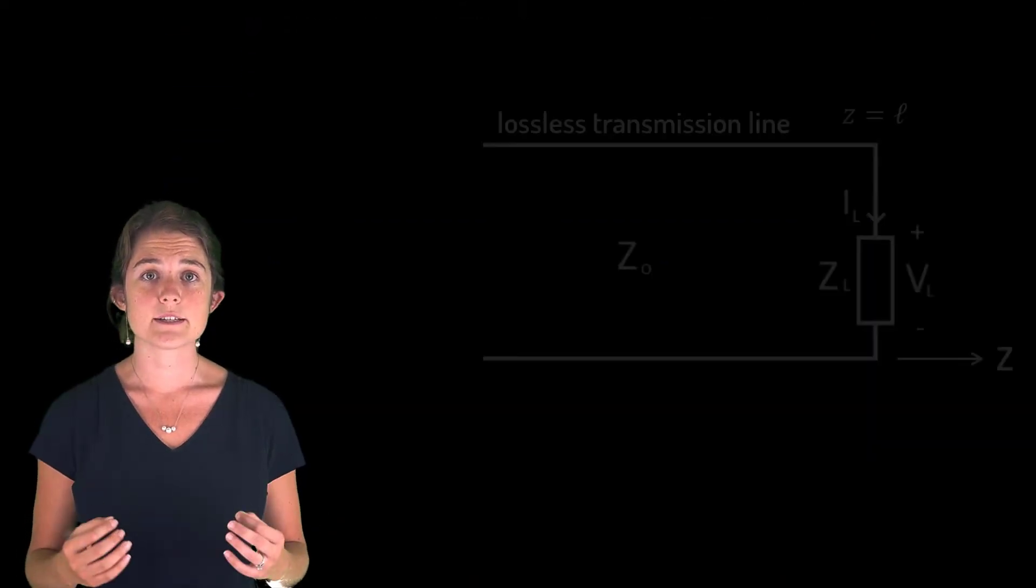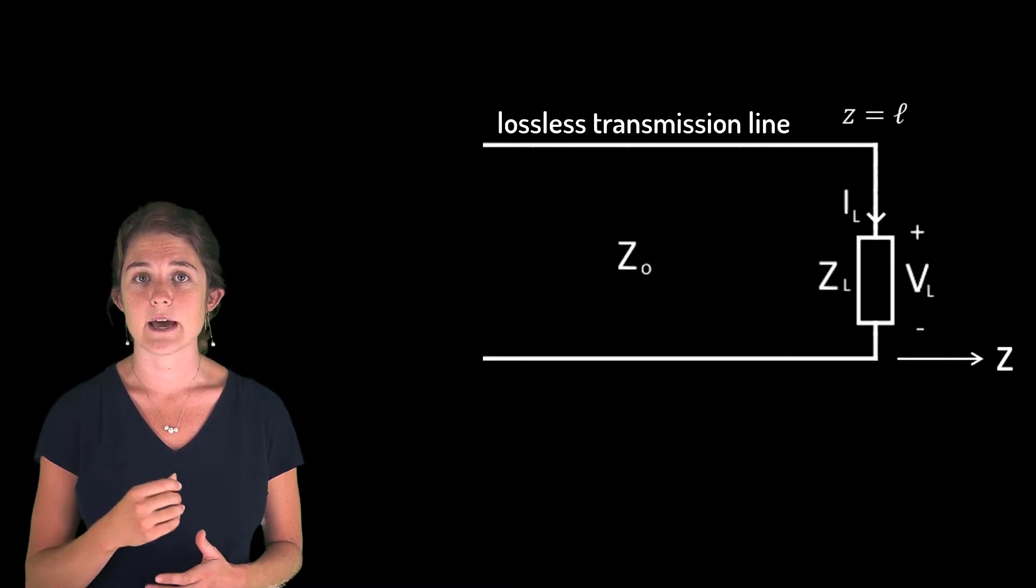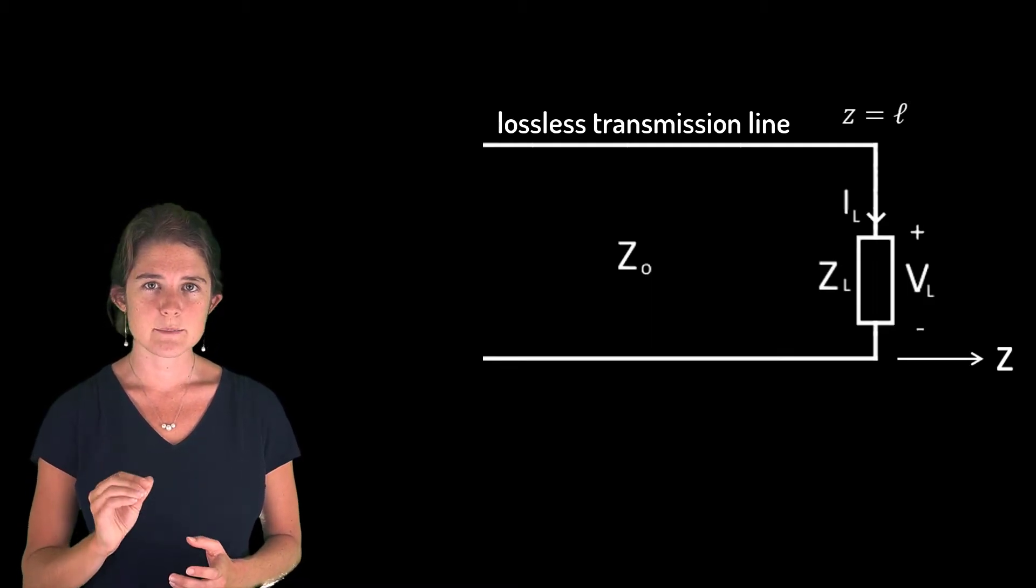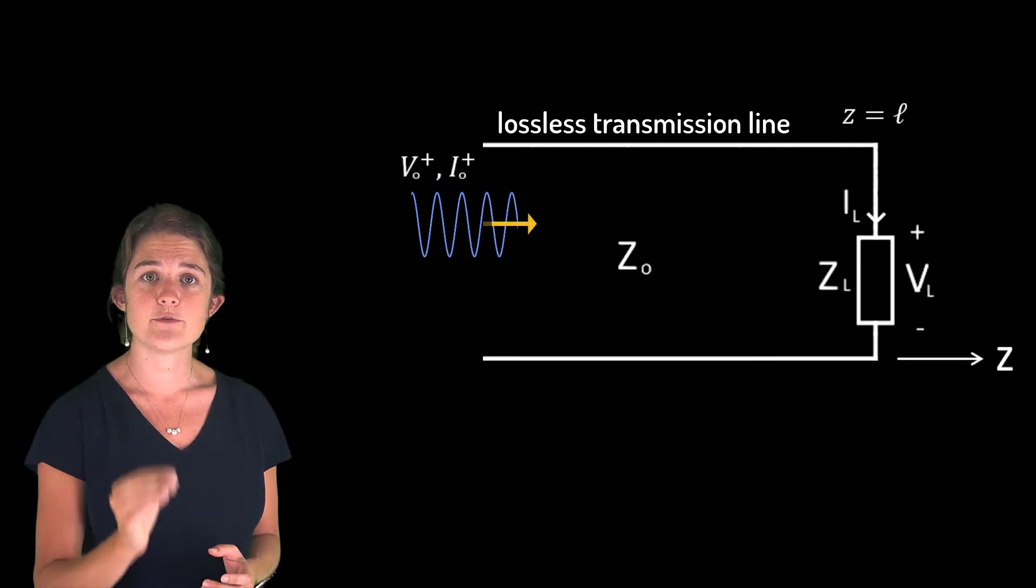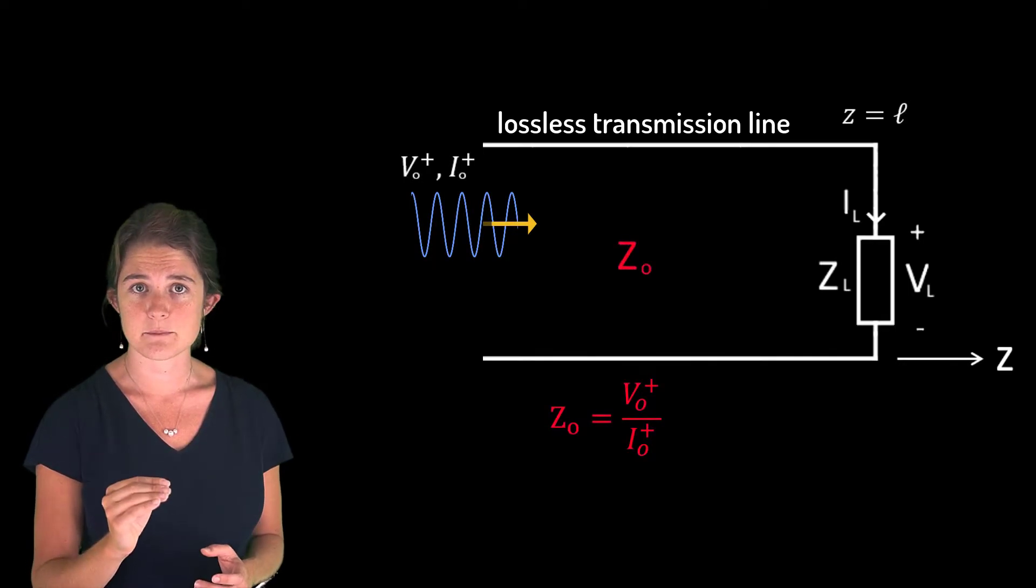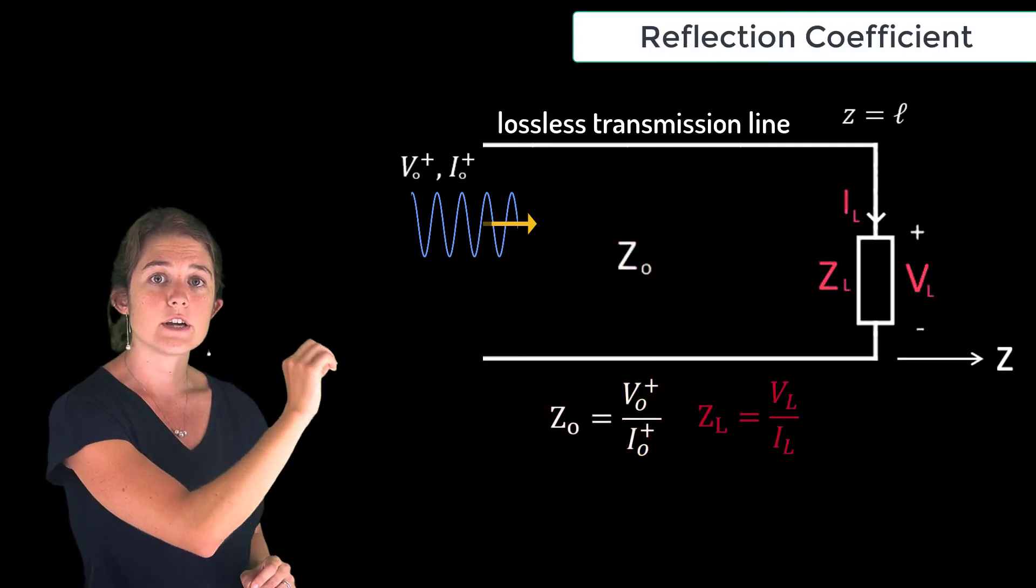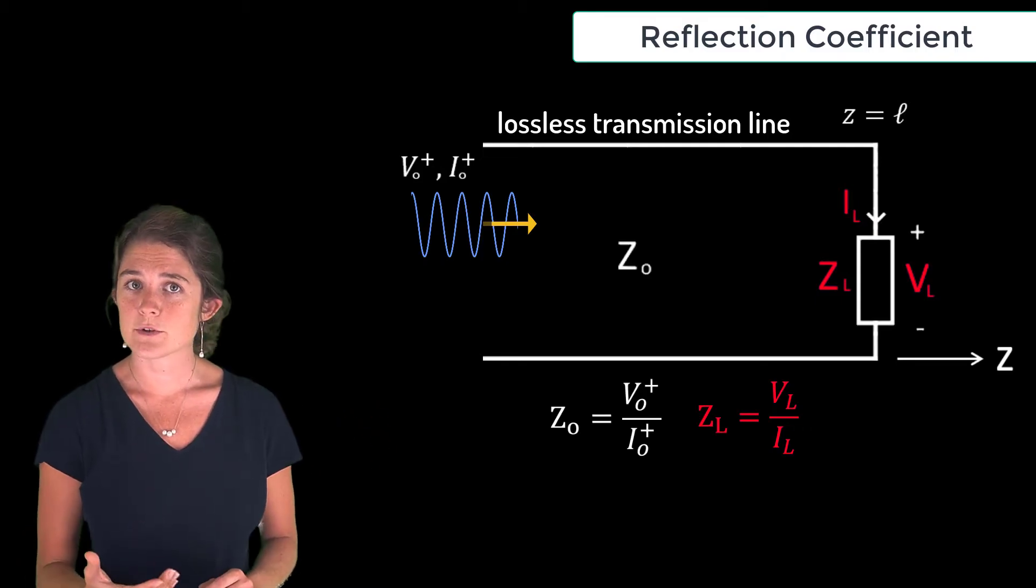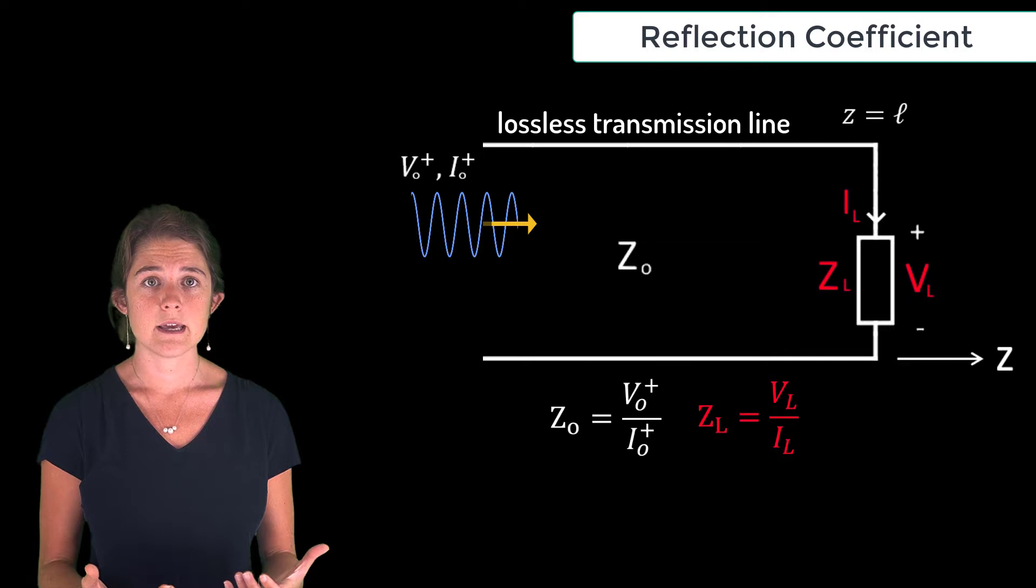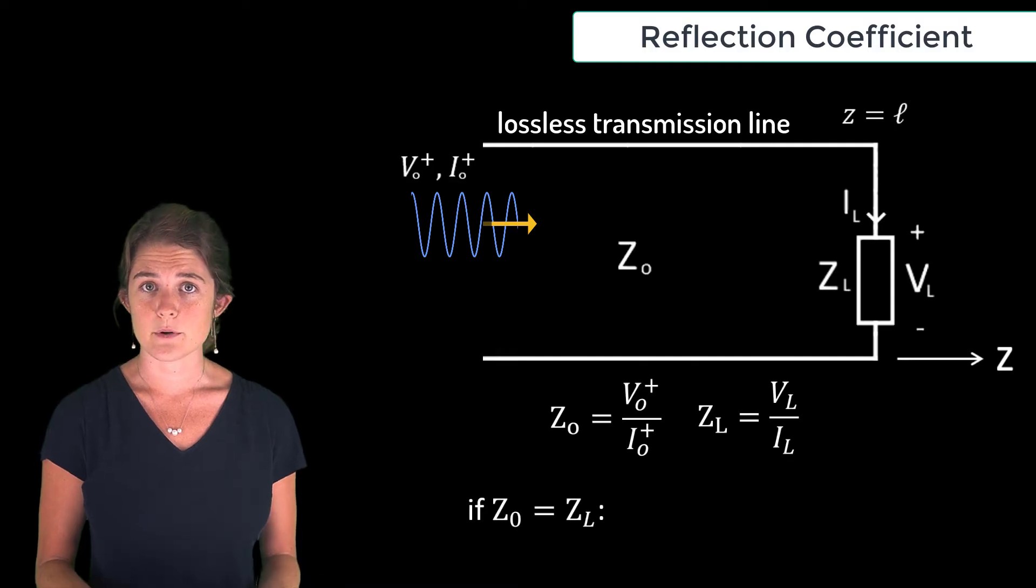Let's look at what happens when a lossless transmission line is used to drive a load located at z equals L. Suppose we input a signal here. The signal will have voltage to current ratio fixed by z0, the characteristic impedance. However, at the end of the line we know that the total voltage and total current must conform to Ohm's law: total voltage divided by total current equals zL, the load impedance.